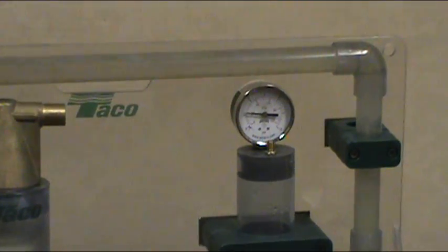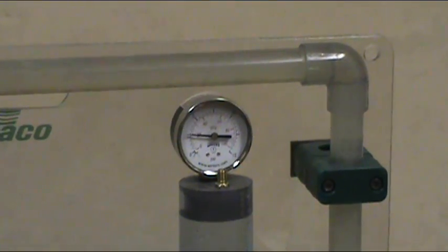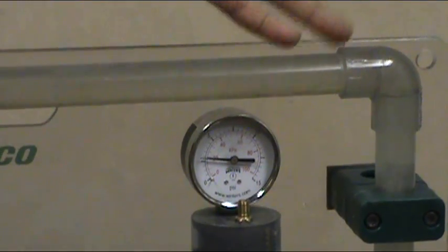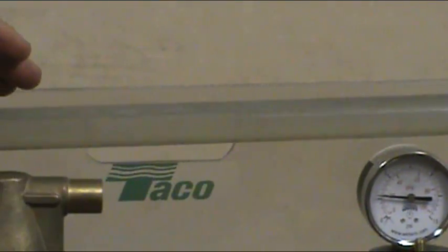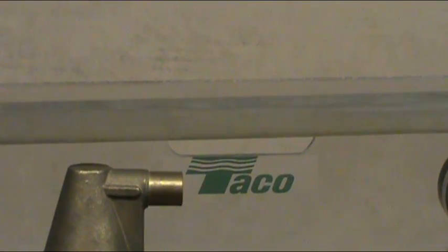One of the rules of thumb with a traditional air scoop is that you put it 18 inches from the elbow. The reason is that these bubbles have to rise to the top of the pipes, and it takes distance. In a typical heating system, it's around 18 inches.